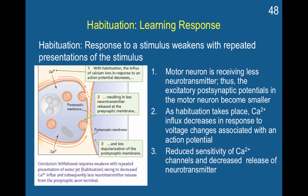Habituation occurs at a neuronal level. With habituation, the influx of calcium ions in response to an action potential decreases. This then results in less neurotransmitter being released at the presynaptic membrane and less depolarization of the postsynaptic membrane. The first time a neuron responds to a stimulus, it would basically have its greatest reaction.